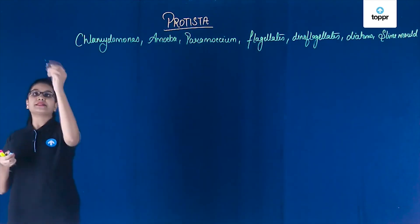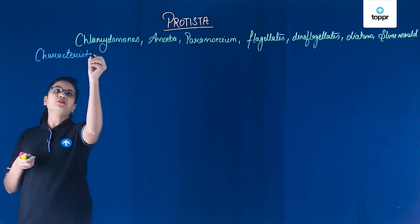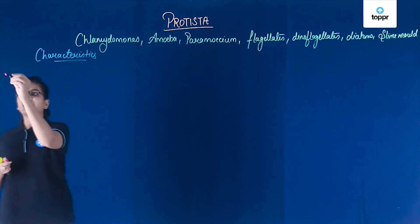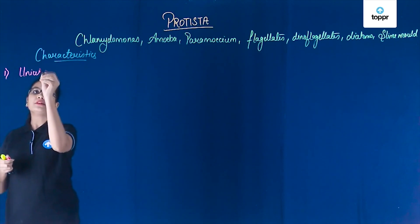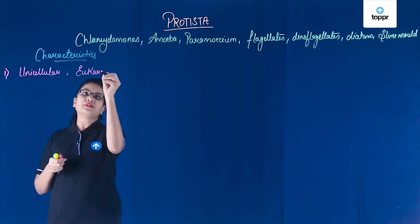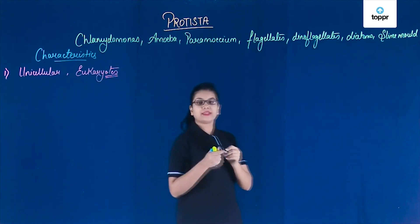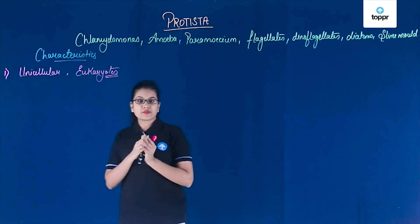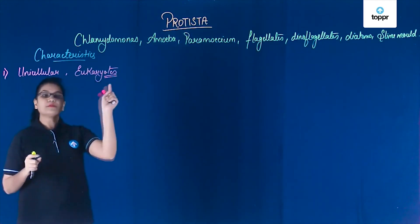Now let's look at the common characteristics of Protista. The first important characteristic is that Protists are unicellular eukaryotes. After the Monerans, Protista have now become eukaryotes, meaning they have a proper nuclear membrane and membrane-bound cell organelles.